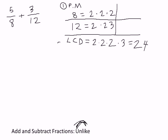Step 3: we rewrite the fractions. Look at 8's prime factors — what is it missing to get to the LCD of 24? It's missing a 3, so it needs a 3. Then look at 12's prime factors — it's missing a 2. Whatever the 8 is missing and whatever the 12 is missing — you can have more than one missing prime factor, as we'll see in the next example.